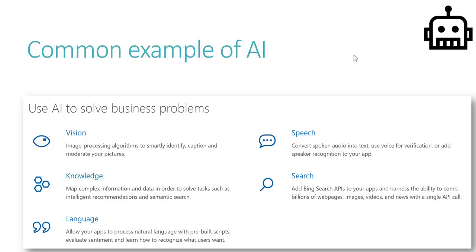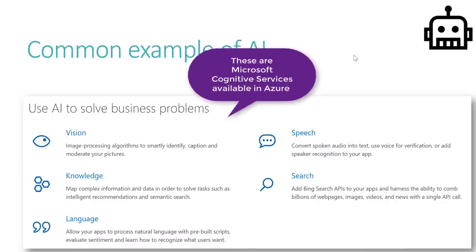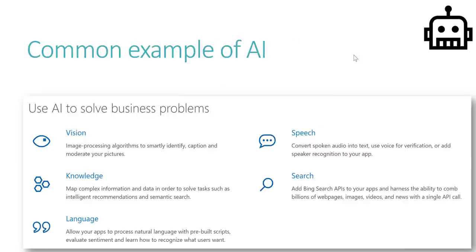Some of the most common examples of AI are vision, speech, knowledge, language, and search. Vision is image processing algorithms. Knowledge maps complex information and data to solve tasks like intelligent recommendations and semantic search. Language and speech — like 'Hey Siri, how are you doing today?' — that's one of the most important speech things Microsoft, Google, and Apple always try to pitch in. Amazon Alexa is another example. And search APIs have been embedded in most of our applications. These are some of the key parts of AI in a simple sense.